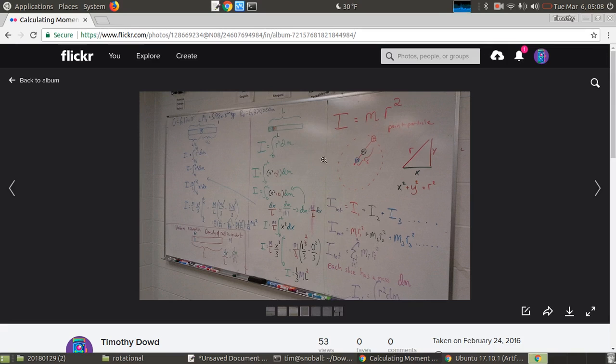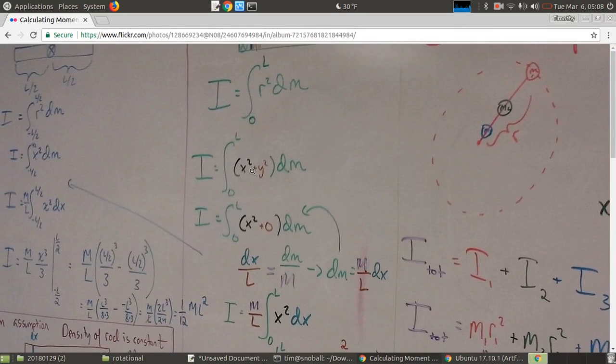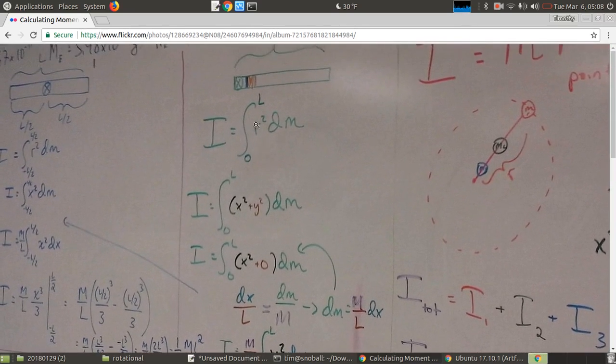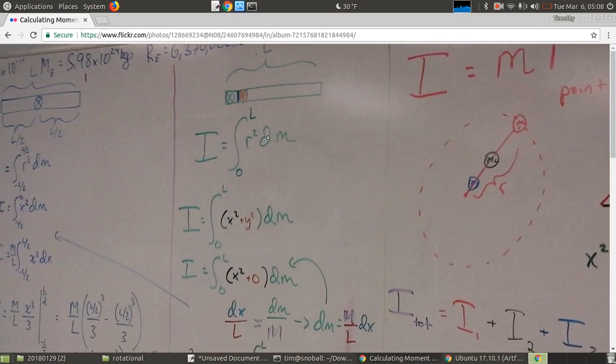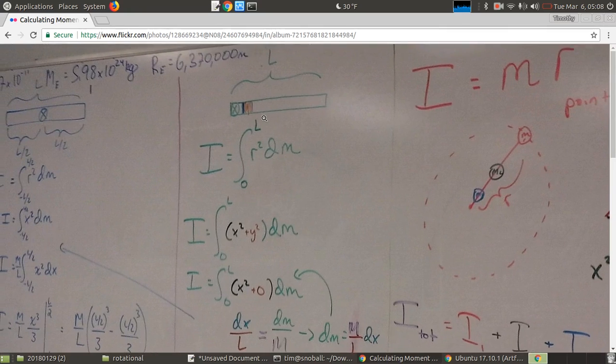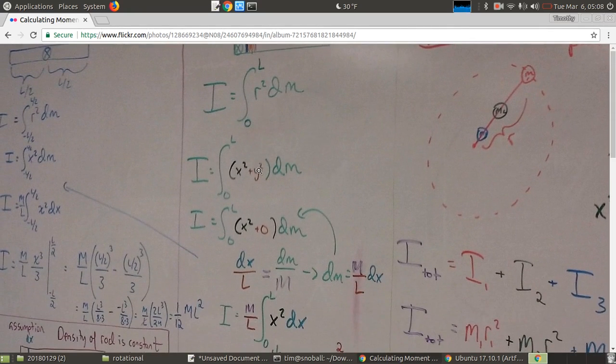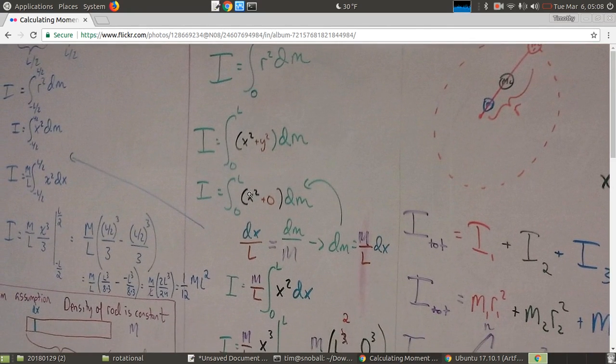The first step in this is to recognize that r, the distance of your masses from the axis of rotation, has both an x and a y component. And using the Pythagorean theorem, a squared plus b squared equals c squared, we can relate x and y, which are a and b, to r. So all I've done here is I've replaced r squared with x squared plus y squared. And then to simplify, because this is all linear and it's all on the x-axis, there is no y squared. I'm just assuming it's thin enough that there's no vertical distance at all. So that makes the integral pretty simple. It's x squared dm.